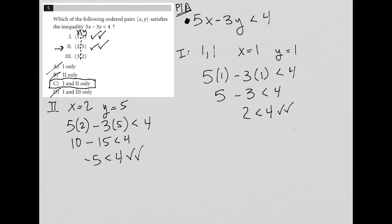Now, we could go on and check Roman numeral 3. I suggest you do that just in case we made a mistake somewhere else. Because if 3 works, then we know we made a mistake either with Roman numeral 1 or 2. But let's just confirm that 3, in fact, does not work.